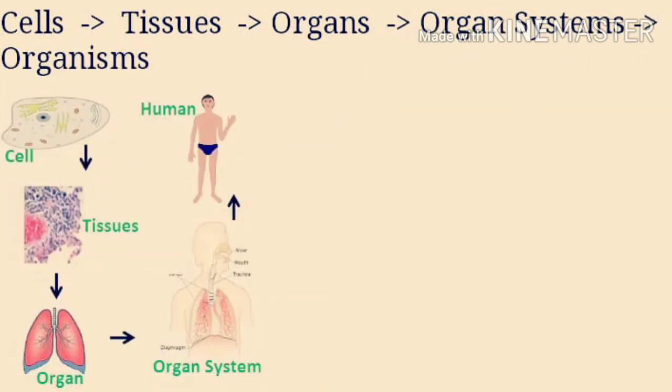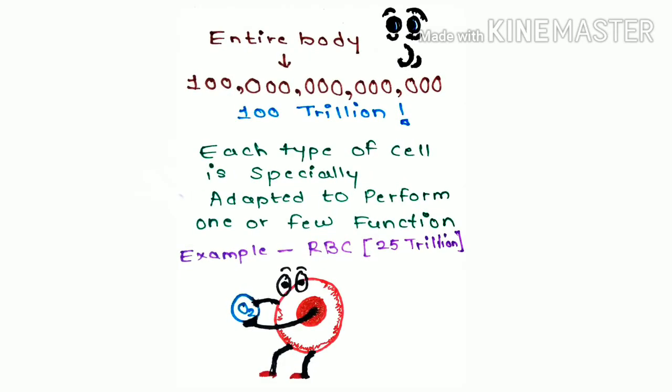Each organ is an aggregate of many different cells that are held together by intercellular supporting structures. Different organs form systems and different types of systems come together to form the body. The entire body has 100 trillion cells.